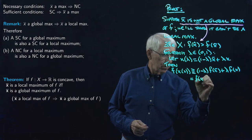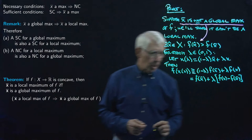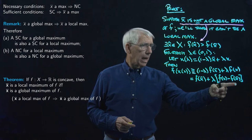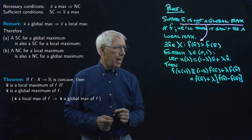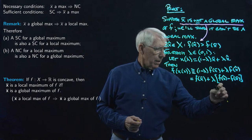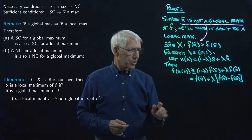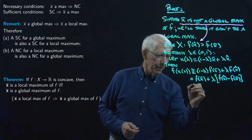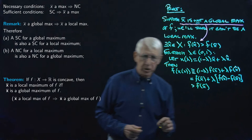This equals f(x-bar) + lambda·[f(x-hat) − f(x-bar)]. Since f(x-hat) − f(x-bar) is positive and lambda is positive, this says f(x(lambda)) is strictly greater than f(x-bar). That really finishes the core of the proof.